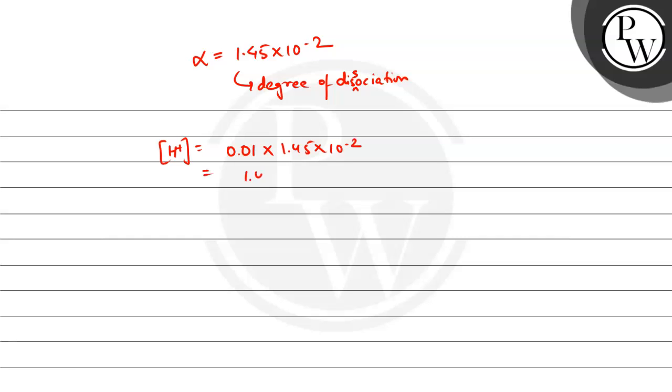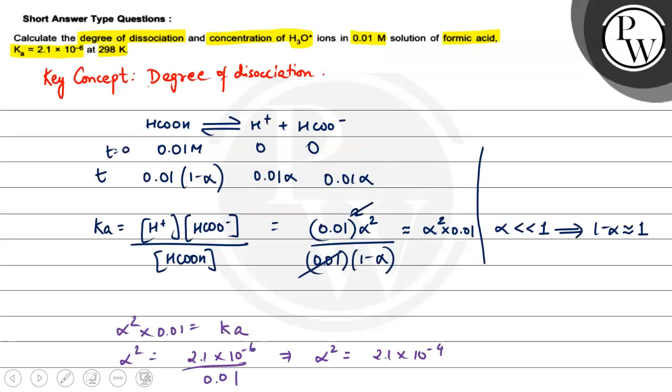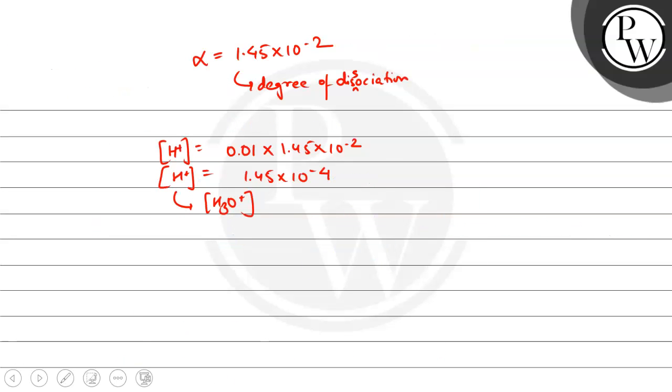This is going to come out as 1.45 into 10 to the power minus 4. So H plus concentration, which is going to be nothing but H3O plus concentration as well, because H3O plus, H plus, equal equal.